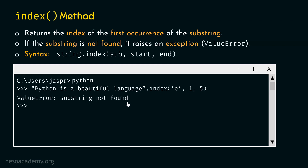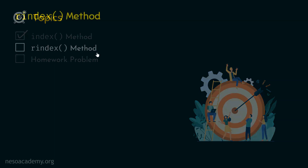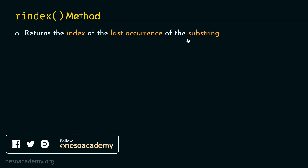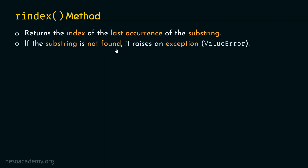After understanding the index method, we move to the rindex method. The rindex method returns the index of the last occurrence of the substring, so it works exactly the same as the rfind method, which we have seen in the last presentation. And as you might have guessed, the difference lies in the fact that if the substring is not found, then it raises an exception — also called a ValueError. It will not return -1 like the rfind method.